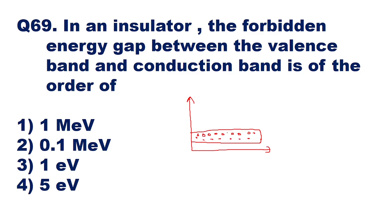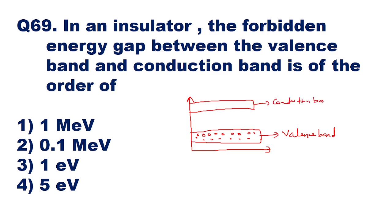No valence electrons will become free so easily. This is the valence band. Because it is difficult for a valence electron to become free, the conduction band is shown further away in the energy band diagram for an insulator. The conduction band contains energy associated with all free electrons. In an insulator, valence electrons require a very high electric field to be pushed from the valence band to the conduction band. Therefore the forbidden energy gap is large in insulators compared to conductors and semiconductors.